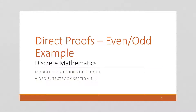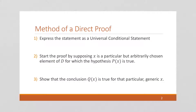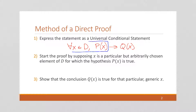Here we're going to do another example of a direct proof, using the definitions for even and odd. First, let's review the steps for doing a direct proof. First, we express the statement as a universal conditional statement. Next, we want to suppose the first part of that statement — we're going to suppose x is an element of the domain and p of x is true.